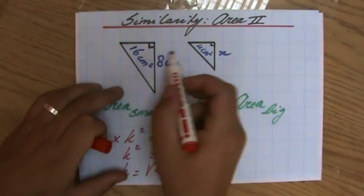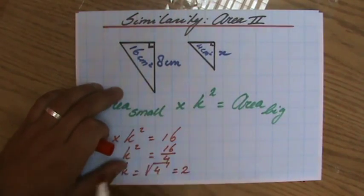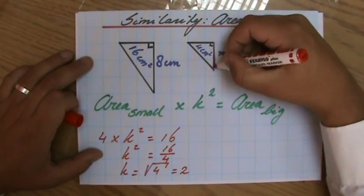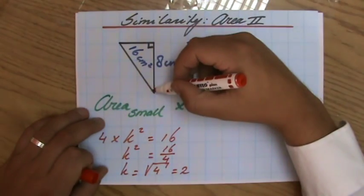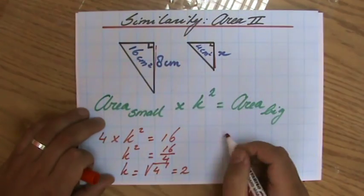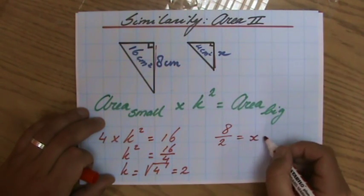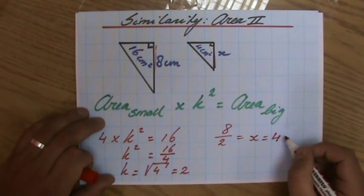These are areas, those aren't lengths. If the scale factor is 2, to find out x we realize it's going to be less than 8 because it's smaller. So it is 8 divided by the scale factor, so the length of x equals 4 centimeters.